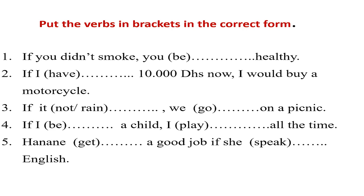Now put the verbs in brackets in the correct form. Let's do the first one together. We see: 'If you didn't smoke...' — that's the if clause — 'you [to be healthy].' What do you say? You would be healthy. Very good. You can stop the video again and finish the exercise, then continue the video to check your answers.